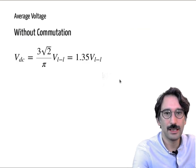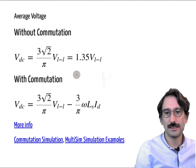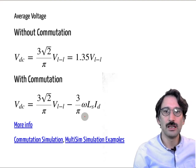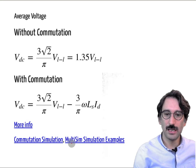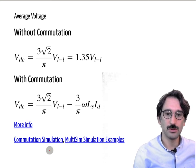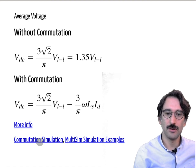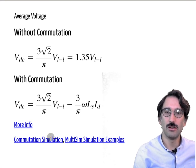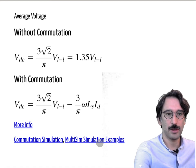That covers the commutation analysis. The math is quite involved, so I advise you to work through the derivations and check the detailed steps in the Mohan textbook. There is also an online simulation tool linked in the presentation — a commutation simulation with 1 mH inductance — where you can play with changes in frequency or current. Multi-sim is a nice online tool for exploring further simulation examples.